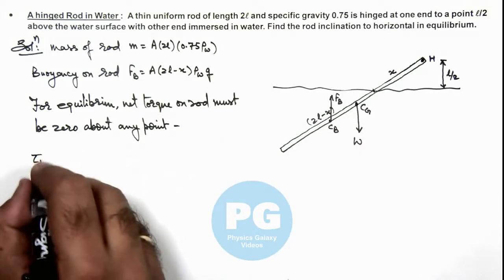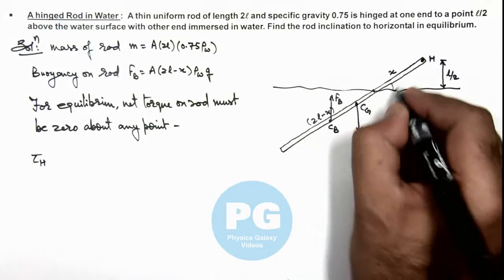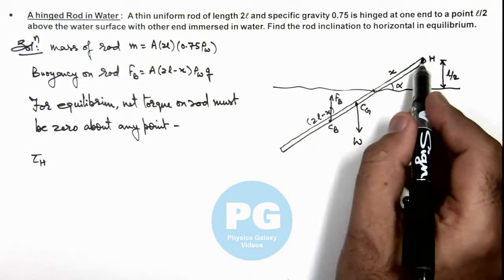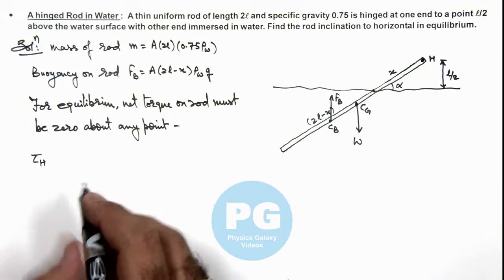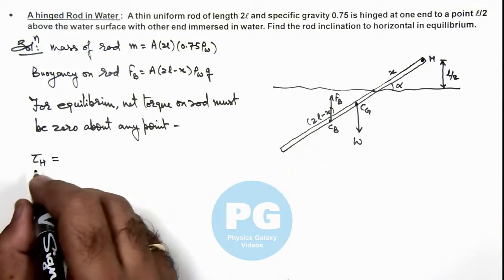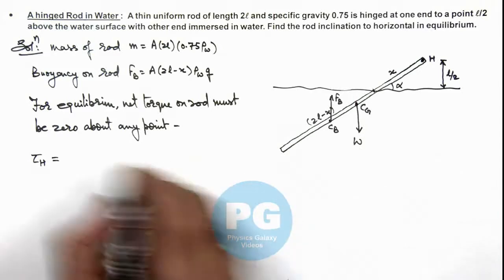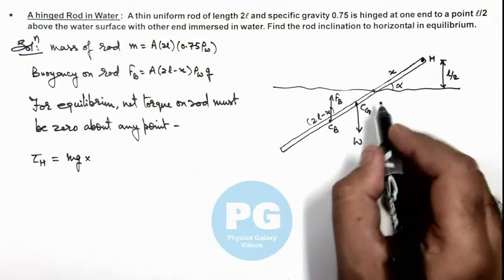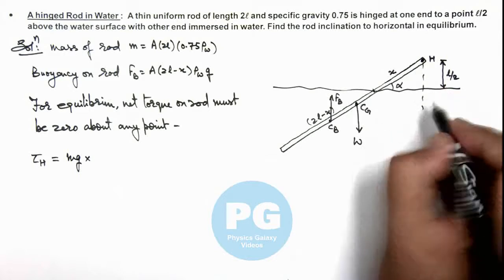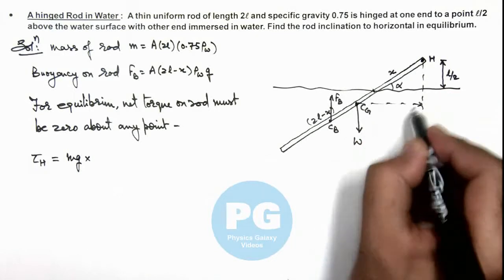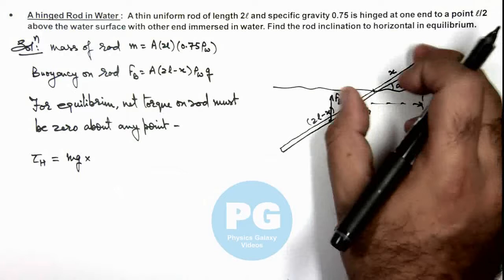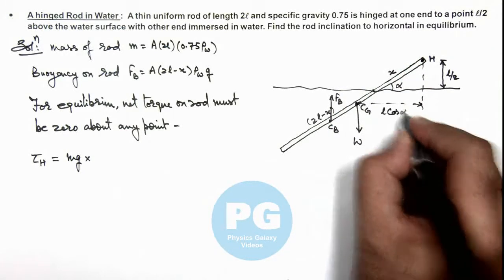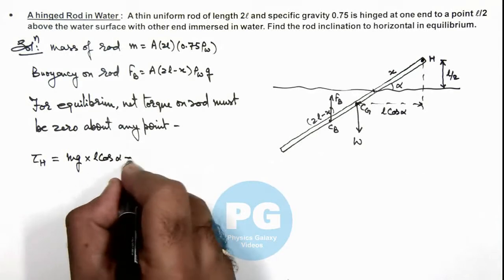So if we calculate torque about hinge, here we can consider the inclination of rod to be equal to α. And here about hinge we can say this torque is given by the weight, it is W which is mg multiplied by the perpendicular distance of this weight from hinge. As this is l, this can be written as l cos α.